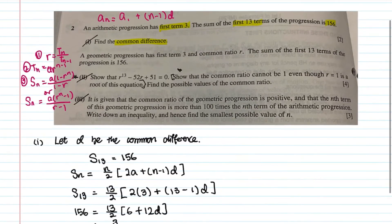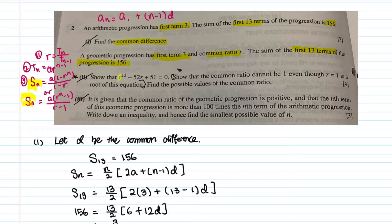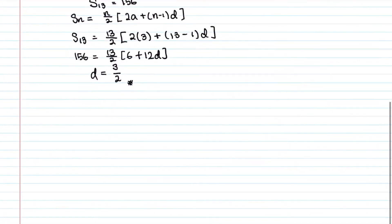Part two: a geometric progression has the first term 3 and common ratio r. The sum of the first 13 terms is 156. Apply your sum of GP formula. Show that r¹³ − 52r + 51 = 0, and then show that the common ratio r cannot be 1 even though r=1 is a root of the equation. Then find the possible values of r.